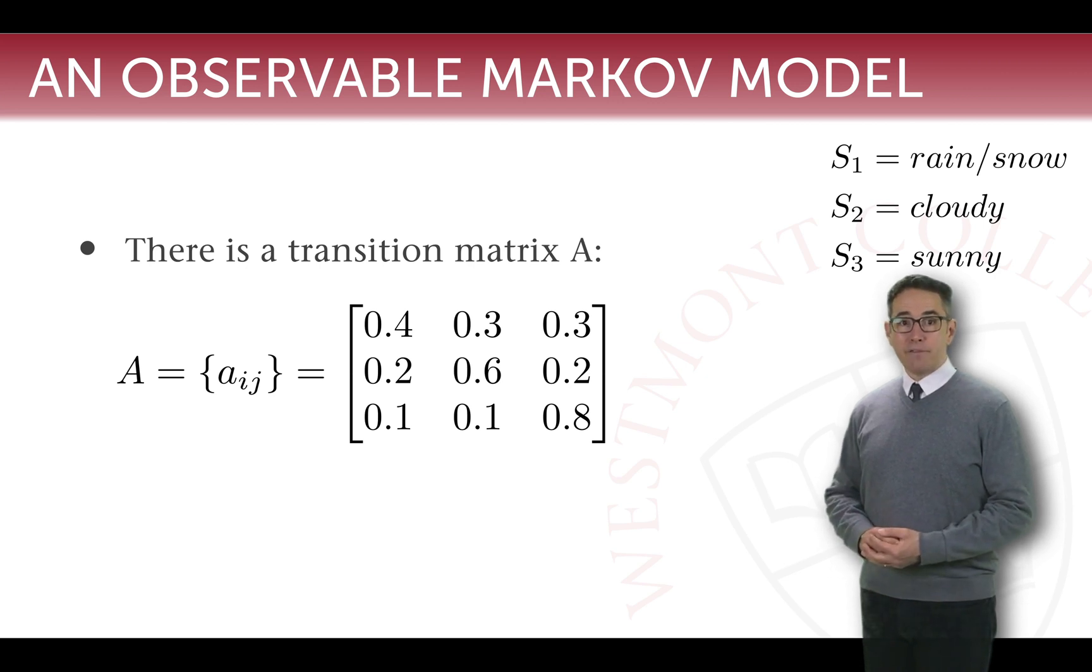That means if it was sunny yesterday, you expect it to be sunny today with 80 percent probability. If it's cloudy yesterday, you expect it to be sunny today with 20 percent probability. If it was rainy yesterday, you expect it to be rainy today with 40 percent probability, cloudy with 30 percent, and sunny with 30 percent. This matrix represents our transitions in our Markov system.